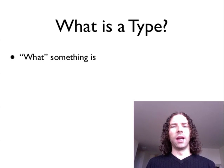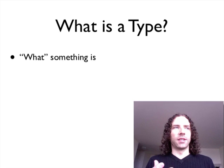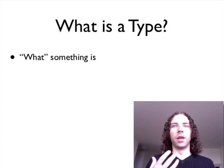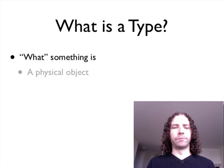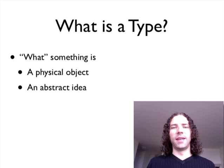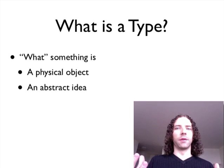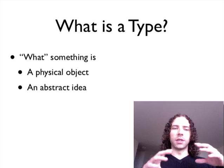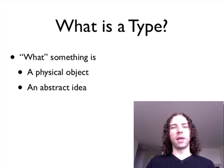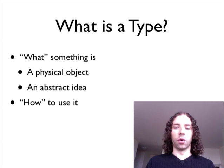So first of all, what is a type? Well it's really what something is. This isn't even just a computer programming concept — it happens in the real world. You could be asking someone what time it is and you expect them to give you a number or a time, not a color or something that wouldn't make any sense. So this can refer to things like physical objects, but also abstract ideas — these are all types of things. You can refer to them and they have a logical meaning. You know that the number five and the number six are different things, but you know they're both numbers. That type tells you how to interact with something — what something is and how to use it. You know that numbers are things you can count with; colors aren't. Well, not normally at least.